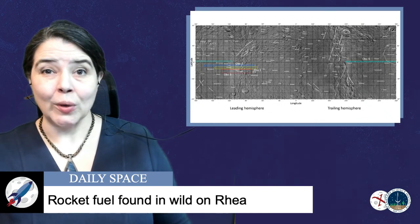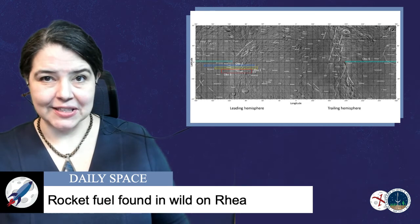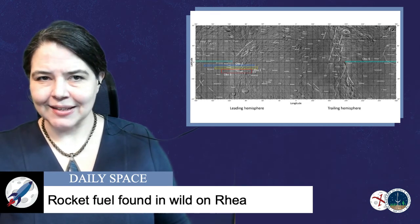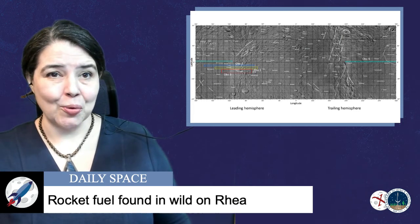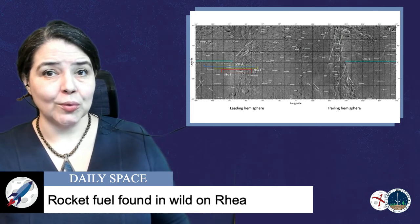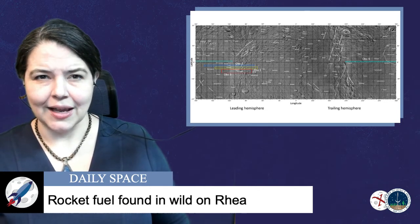Once again, we are reporting on molecules in the atmosphere of a distant world. Instead of Venus or Titan, we're talking about Saturn's moon, Rhea. In a new report in Science Advances, a team of researchers claim to have found evidence of hydrazine.